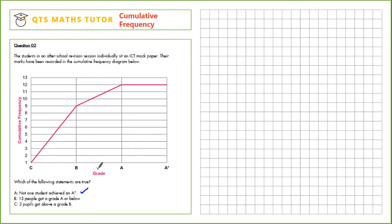For part B: 13 people got a grade A or below. First we go to grade A and then we'll read up to the curve and then across to the cumulative frequency. From there we can see that 12 got a grade A or below. So this is incorrect.